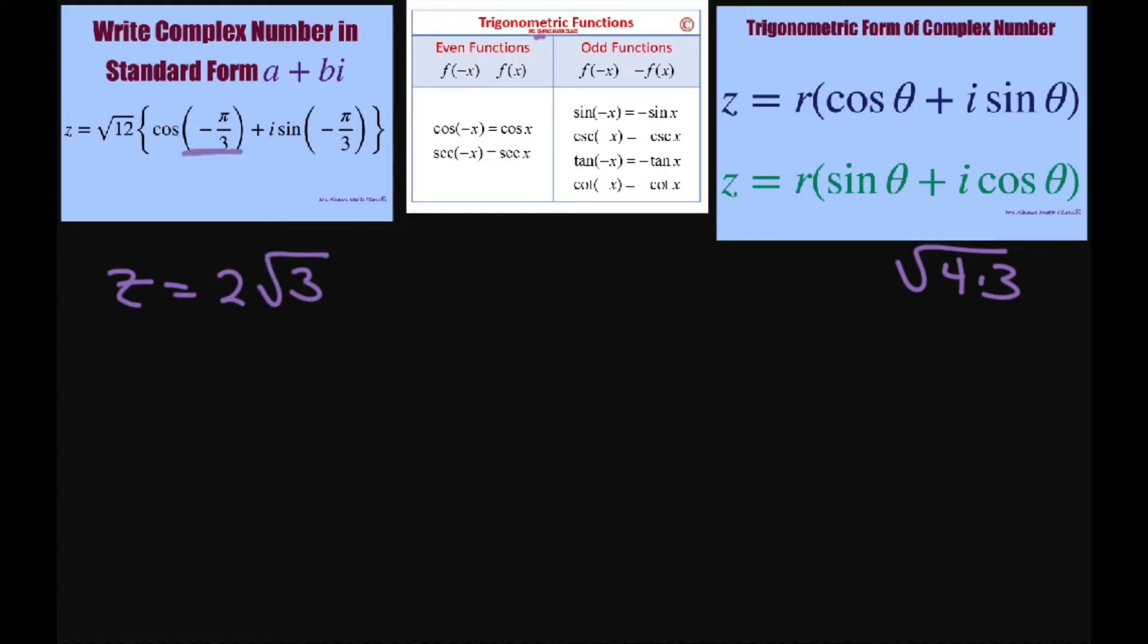Cosine is the even function, so I can just take out the negative and write this as cosine of pi divided by 3.